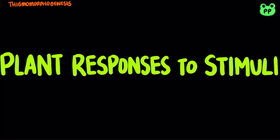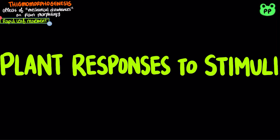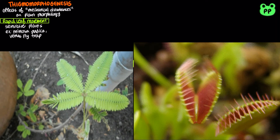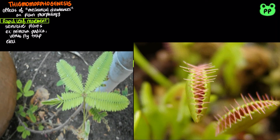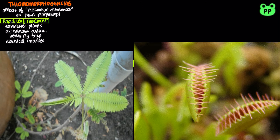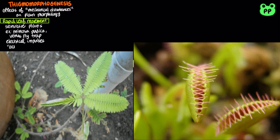Thigmomorphogenesis refers to effects of mechanical disturbances on plant morphology. It includes rapid leaf movement of sensitive plants, such as Mimosa pudica and Venus flytrap, which quickly coil their leaves when touched. Rapid leaf movements spread through electrical impulses called action potentials, which are analogous to animals' nervous system.